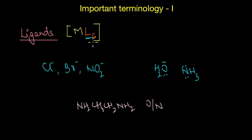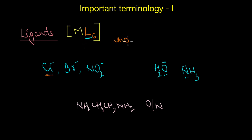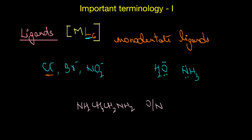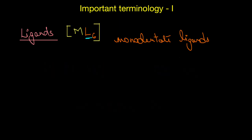When a ligand is bound to a metal atom through a single donor atom — such as Cl−, or the oxygen of water, or the nitrogen of ammonia — then the ligand is referred to as monodentate. All of the examples given here are examples of monodentate ligands. When a ligand can bind through two donor atoms, it is said to be bidentate.